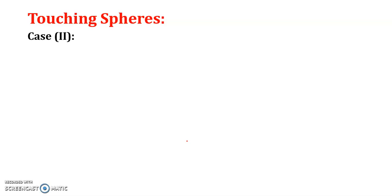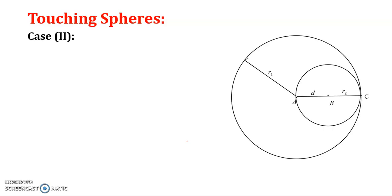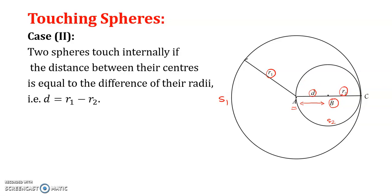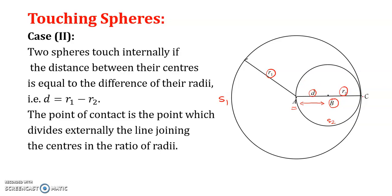Case 2 is when two spheres touch each other internally. Consider sphere S₁ with center A and radius r₁, and sphere S₂ with center B and radius r₂. The distance d between the centers is obtained by taking the difference of the larger radius minus the smaller radius: d = |r₁ − r₂|. The point of contact is the point which divides the line segment AB externally in the ratio of their radii.